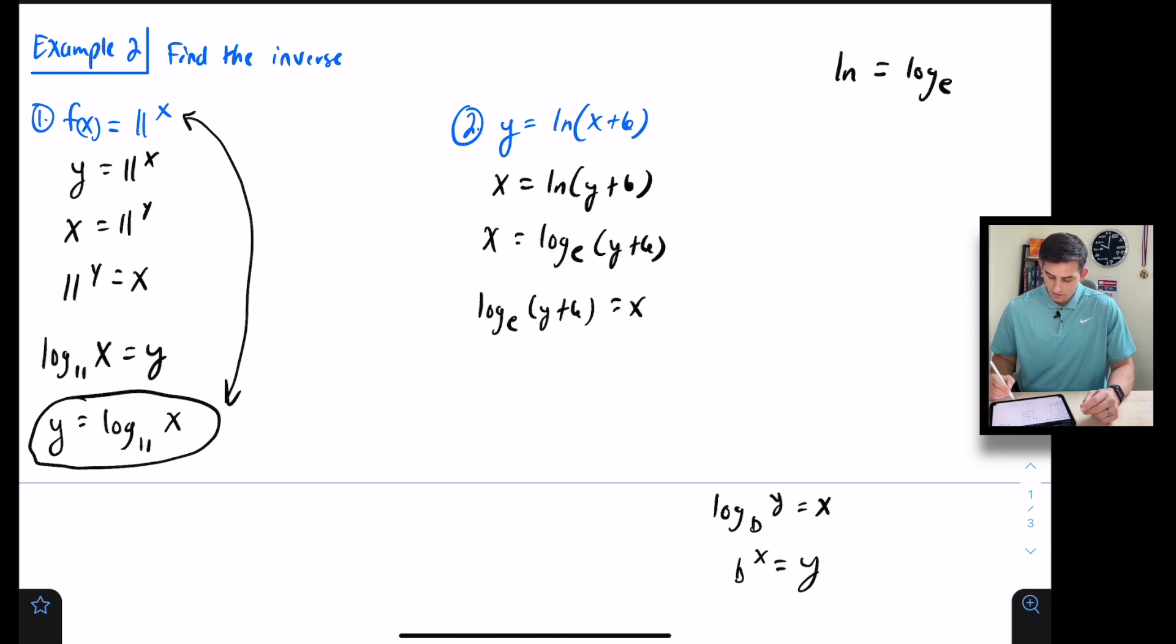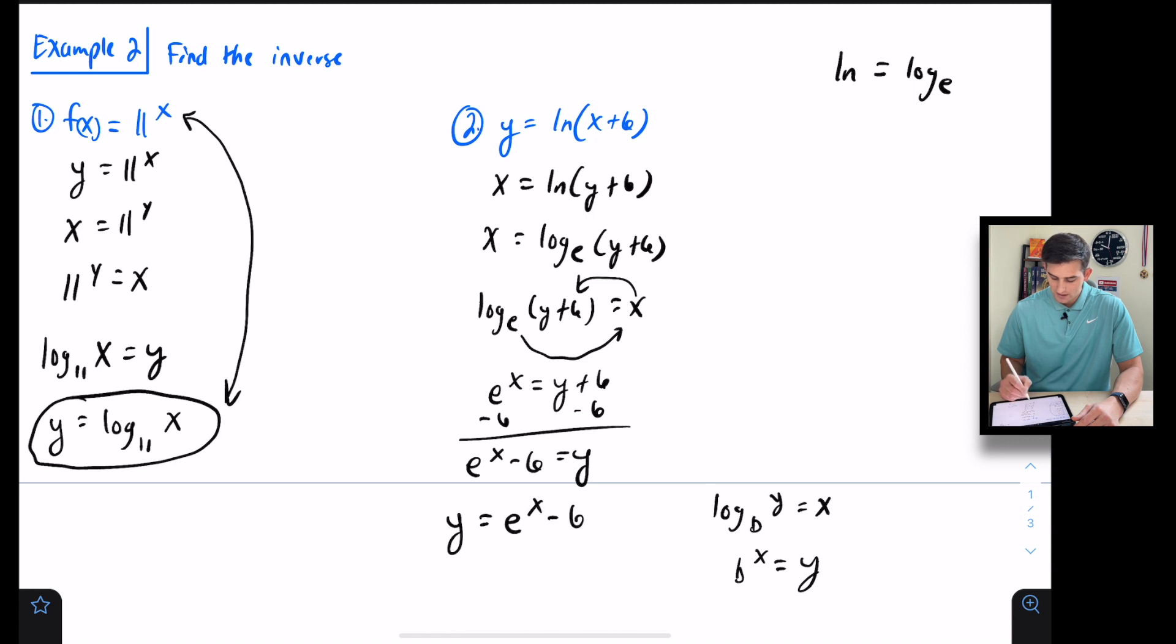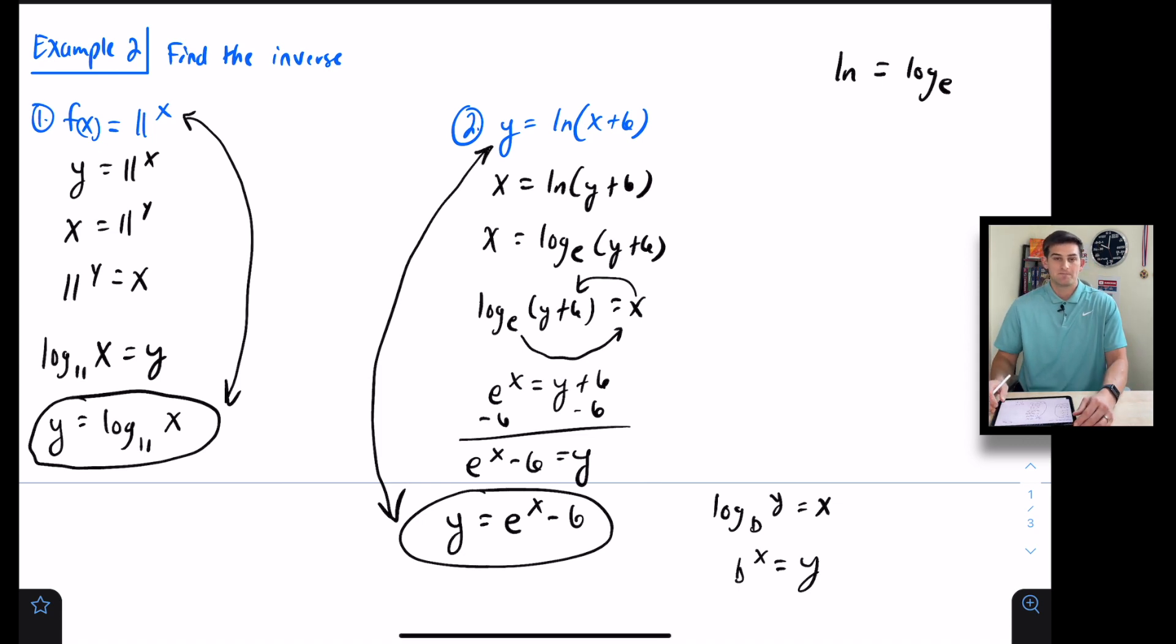We're going from logarithmic form to exponential form, so I would say e^x = y + 6. Remember we're trying to solve this for y, so we subtract 6 to get e^x - 6 = y, or y = e^x - 6. That would be our inverse for y = ln(x + 6). And that's how you can use some inverse properties for logarithmic functions.